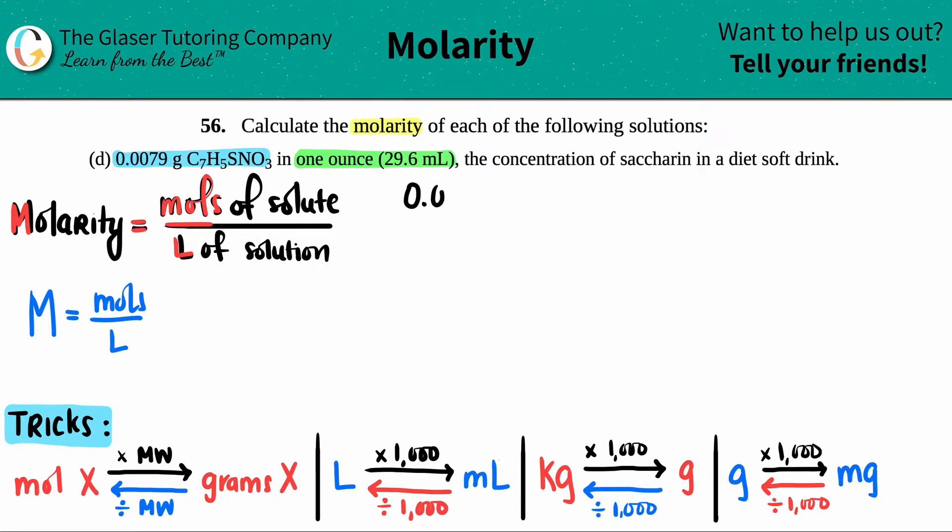Let's do 0.0079 grams of C7H5SNO3, and I have to find the moles. We could do dimensional analysis - we've done tons of problems with that. But here's a quick trick: if you have a gram value of any substance and you want to go to the mole value of the same substance, that's what we have here - starting with grams of saccharin and going to moles of saccharin.